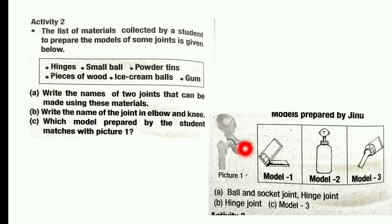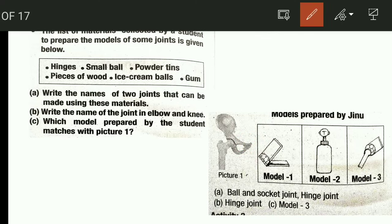This one is the ball and socket joint — it's model 3. Model 3 is the ball and socket joint. We'll connect these. Now we can identify the elbow and knee joint as the hinge joint.